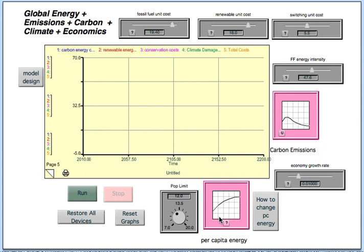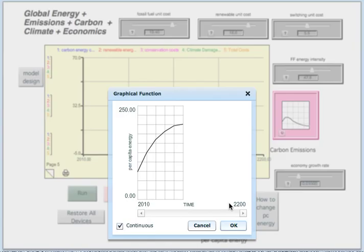So this shows the per capita energy in terms of exojoules of energy per billion people over the history of this model runs over about 200 years. And this is a graphical function of time that can be changed, and we'll change that here in just a second.